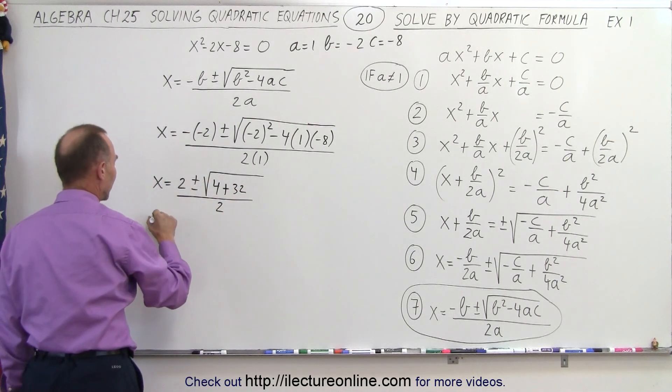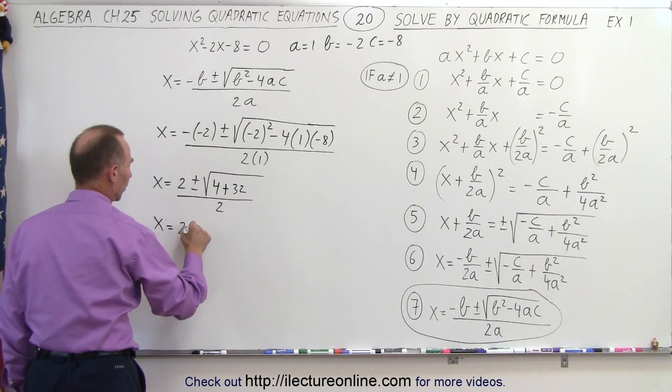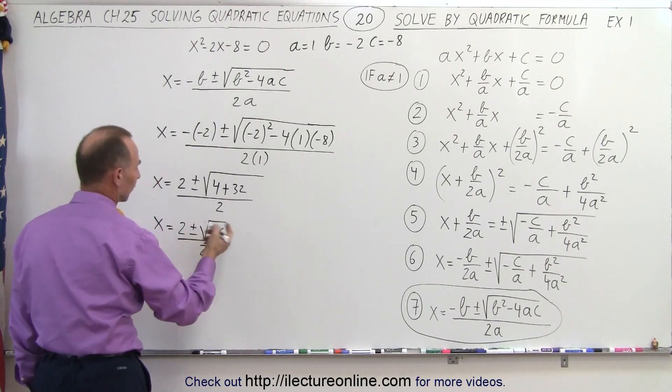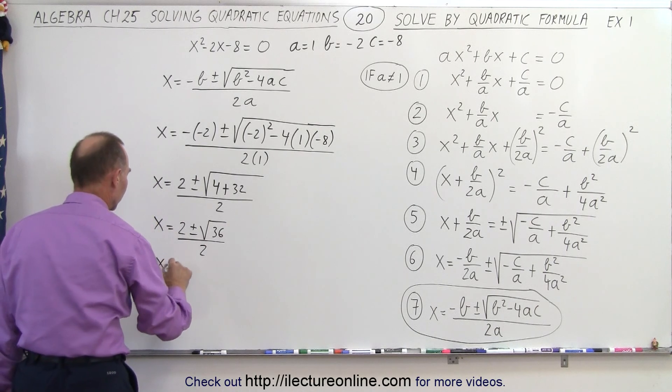Continuing to simplify, X equals 2 plus or minus the square root of 36 divided by 2, and the square root of 36 equals 6.